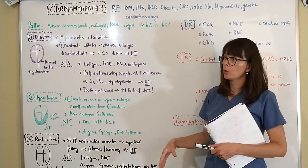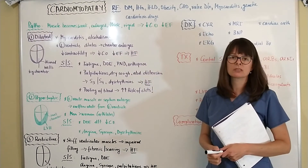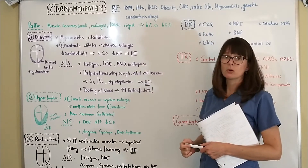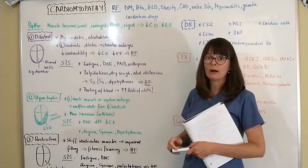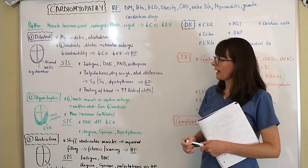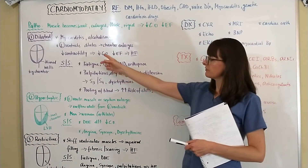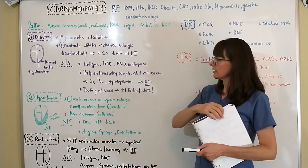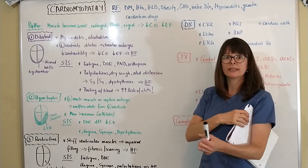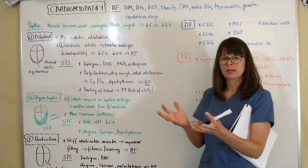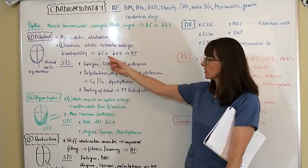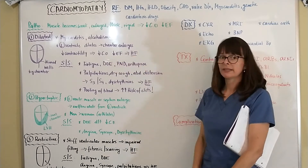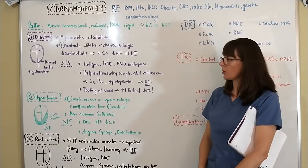There are three types of cardiomyopathy: dilated, hypertrophic, and restrictive, listed in order of how commonly they occur. Dilated cardiomyopathy is the most common and is mostly caused by myocarditis or alcoholism. The left ventricle dilates and the chamber enlarges, decreasing contractility, which reduces cardiac output and ejection fraction, eventually leading to heart failure.